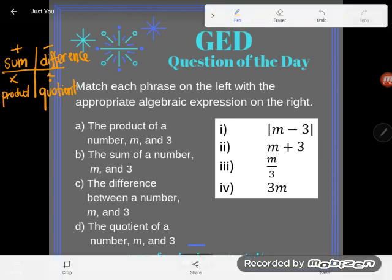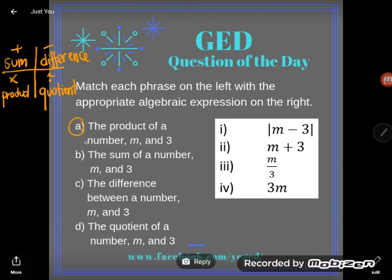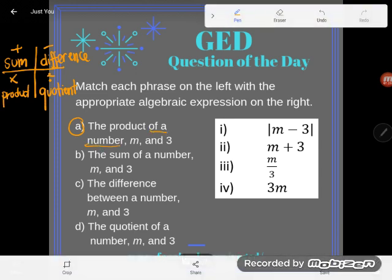Okay, so that will help us here to translate these expressions. So let's take a look. A says, the product of a number, now I don't know what that number's name is, and in algebra, when we don't know what the name of a number is, I shouldn't say the name,